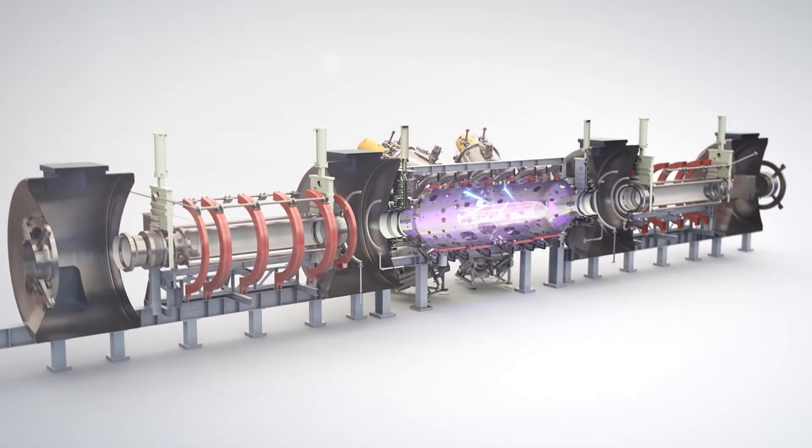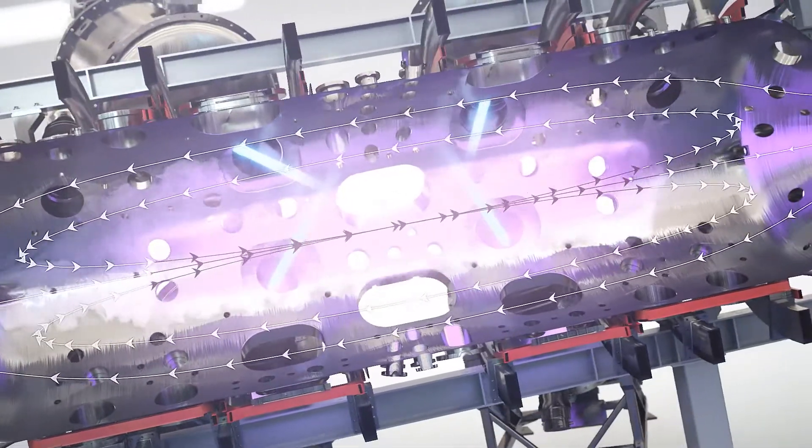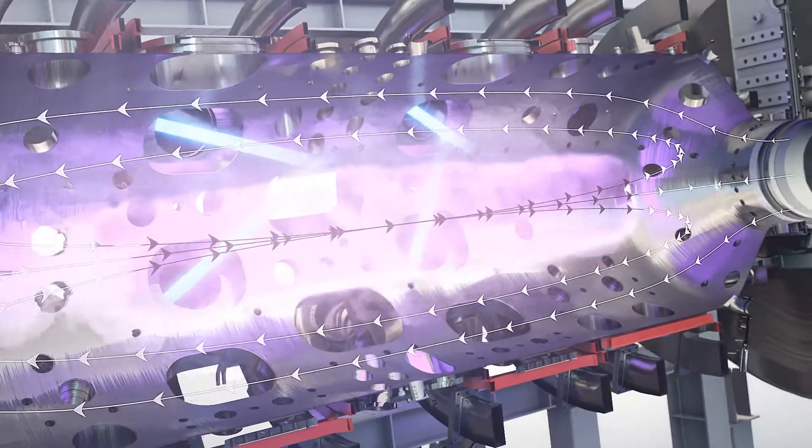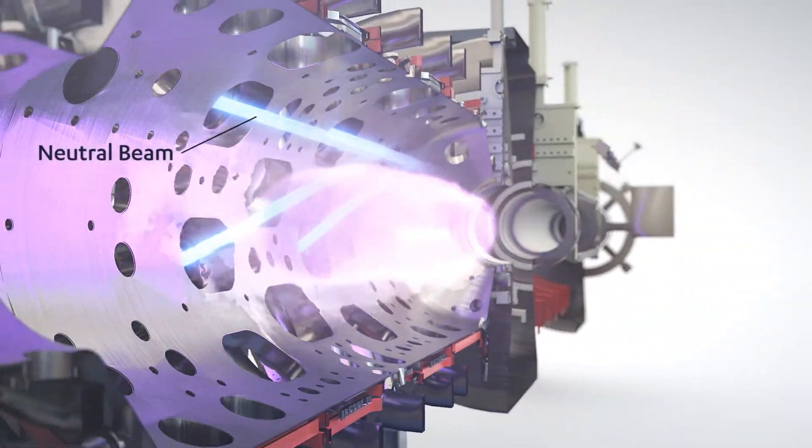Norman, also known as C2W, uses a linear field reverse configuration, combined with intense neutral beam injection to sustain plasma.